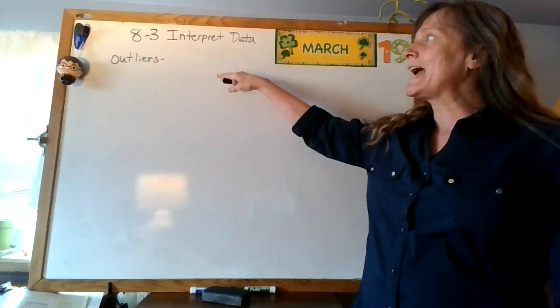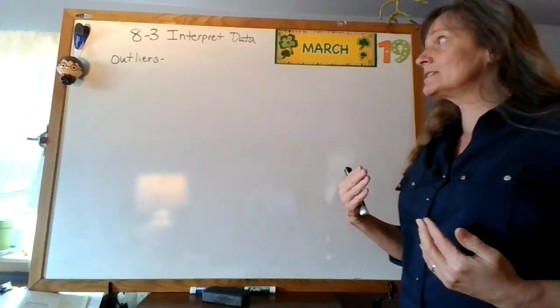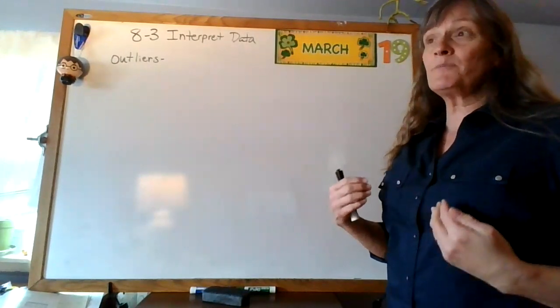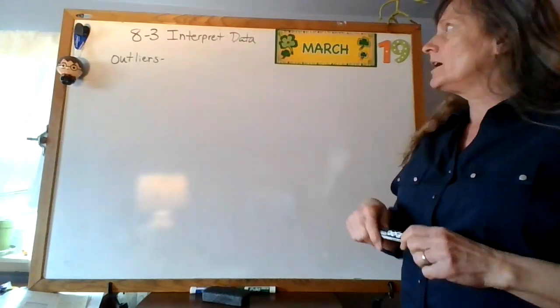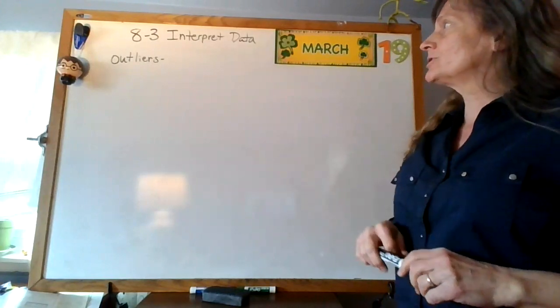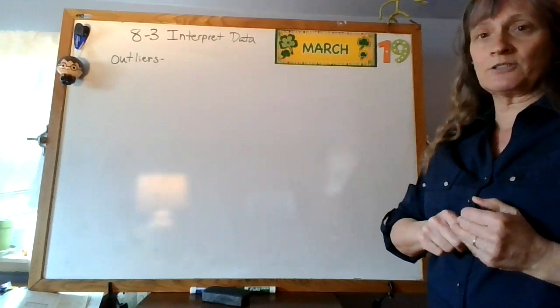Today we are adding outliers. Now this is not an actual part of central tendency, but it affects some things, especially range, greatly. So make sure you've written 8-3. Interpret data in your notebooks and in your table of contents.